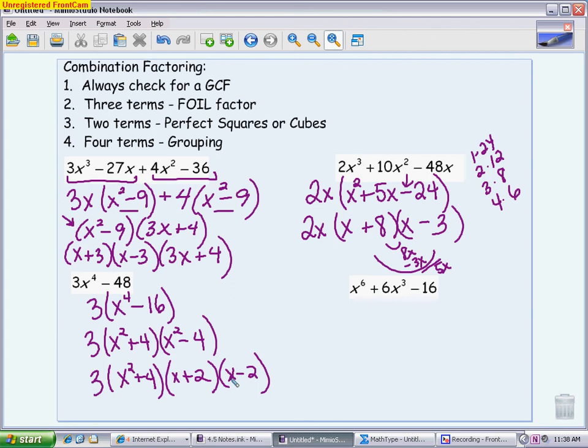One more. We look at this. There is no greatest common factor. I can't take out an x. I can't take out a number. So then I am going to count the terms. There are three terms, so I am going to try to FOIL factor it. So I am going to make my parentheses. This is a subtraction, so that means one is positive and one is negative. What is different about this is this is an x to the 6th. So to get an x to the 6th, we had to have an x to the 3rd and an x to the 3rd. That is what gives me a middle term that has an x to the 3rd.